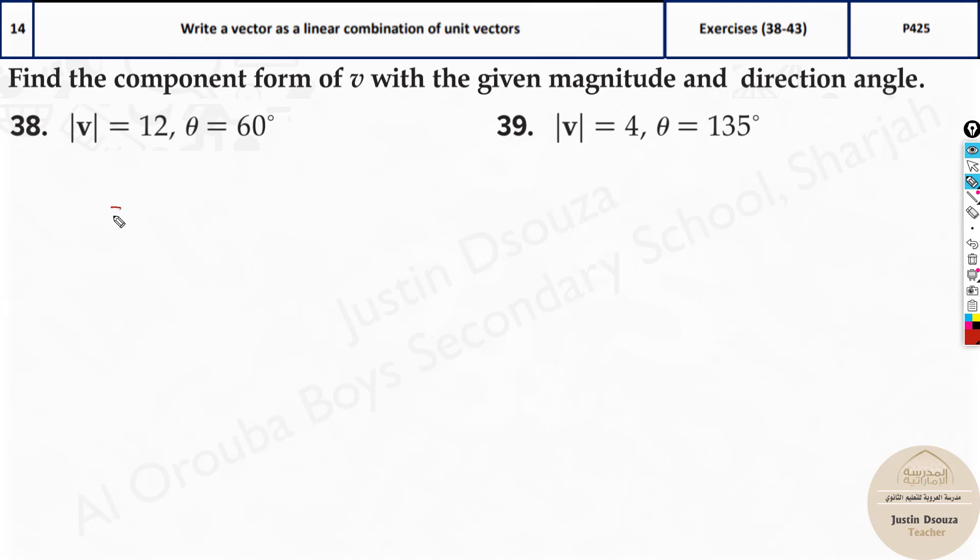It is very simple. The component form is given by a very simple formula. We have used this before. Magnitude multiplied by cos theta, magnitude multiplied by sin theta. This is the x, this is the y. That's it.